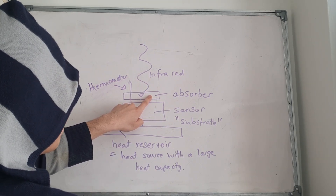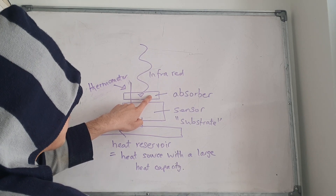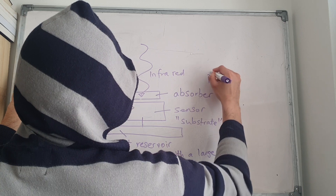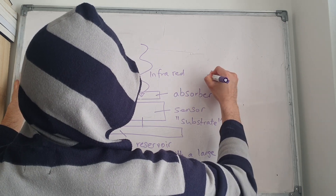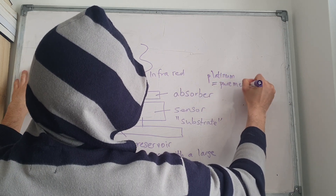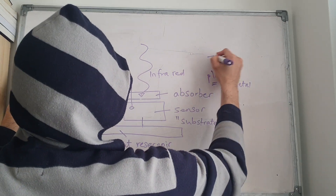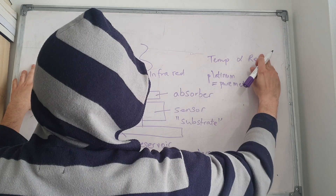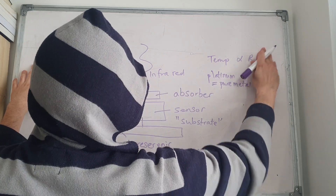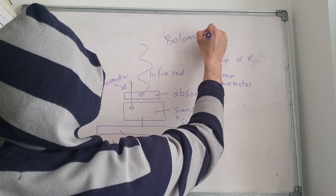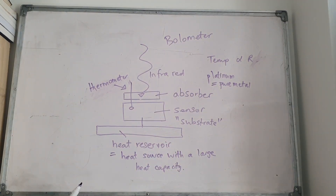The absorber should be made of a metal where the temperature increase is proportional to the resistance. For example, a pure metal like platinum, where the temperature increase is proportional to the resistance. This is a bolometer.